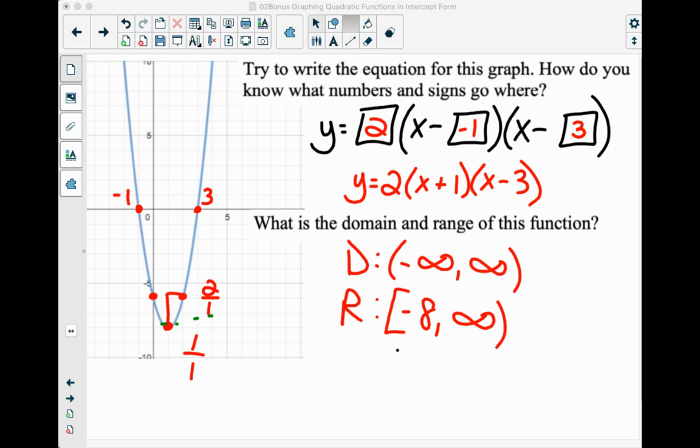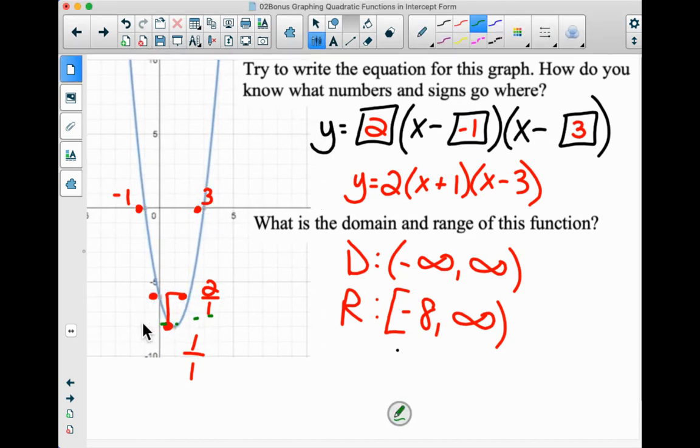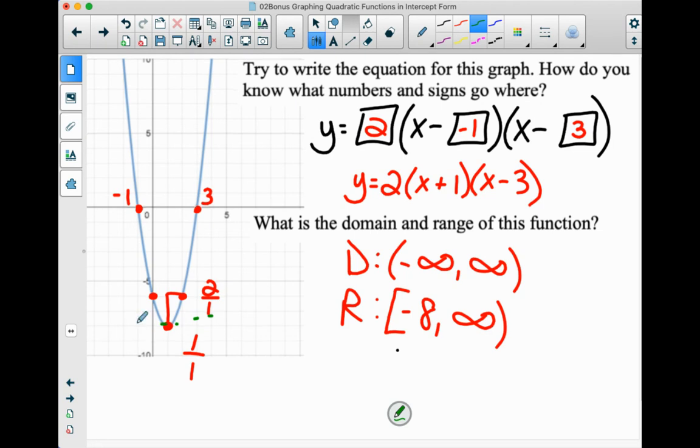Okay, so I ran out of time with the buzzer beater. I didn't quite sink the shot, but the range is all our y values, and all of the y values, if I don't move the graph around, are greater than or equal to negative 8. So that's why we have the bracket with the negative 8 towards positive infinity, which just looks like the 8 fell over.